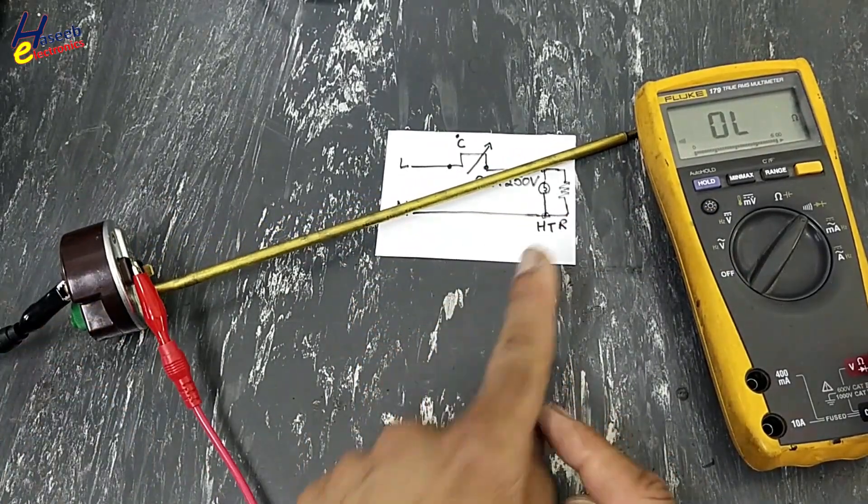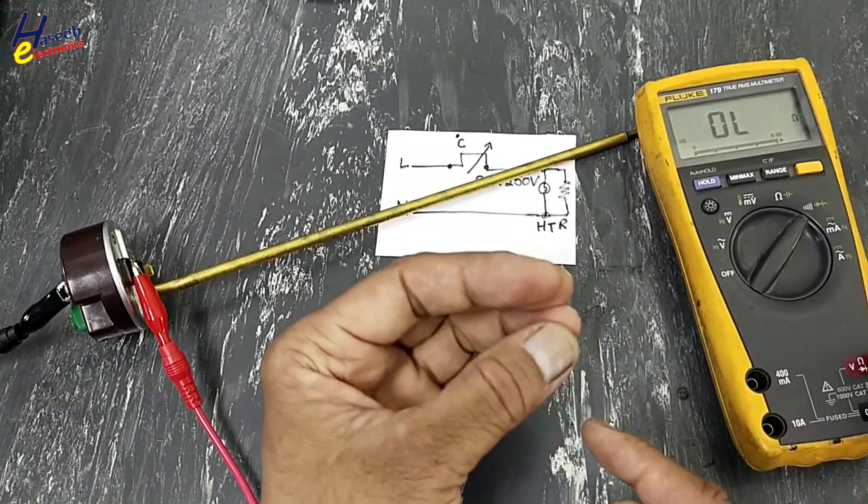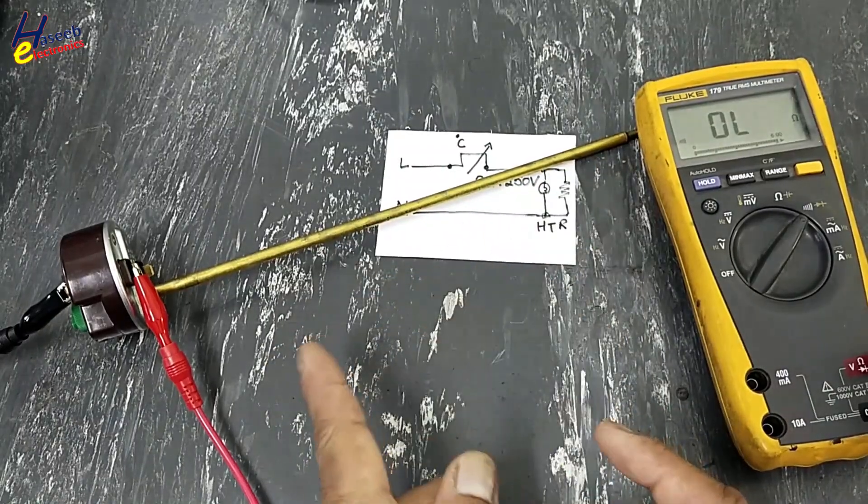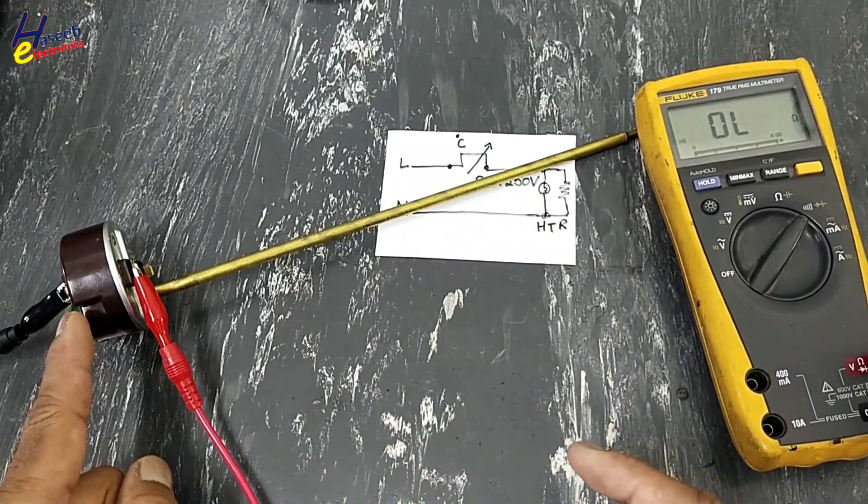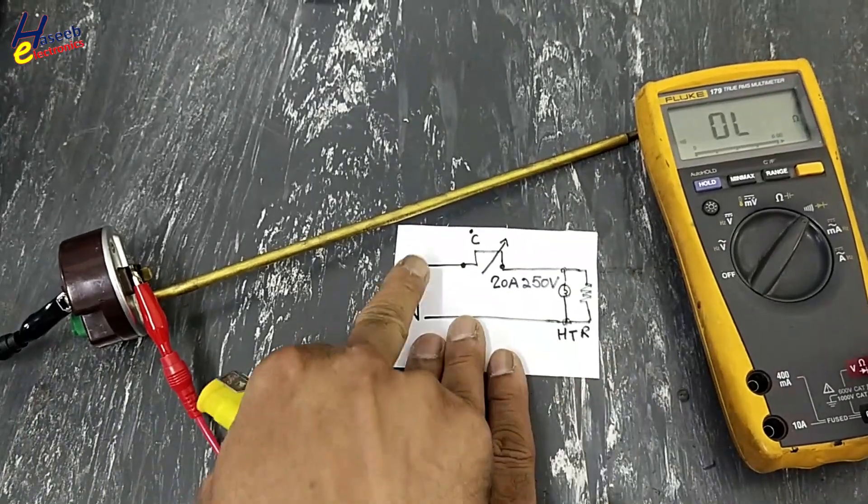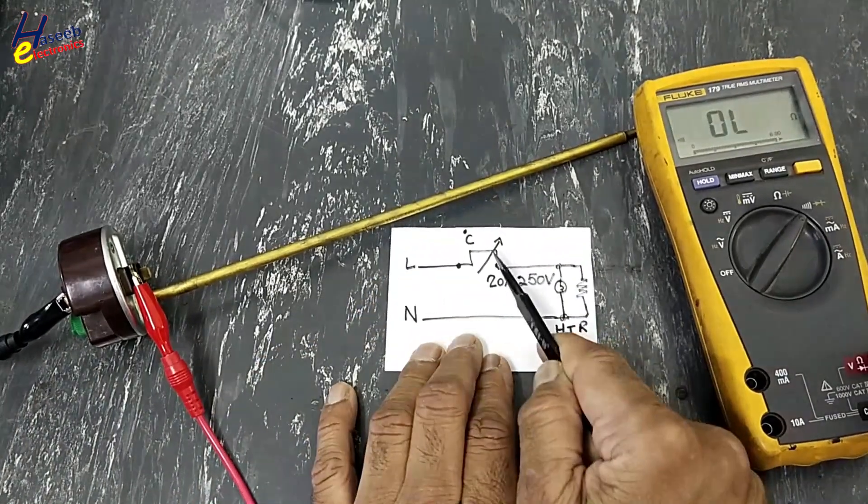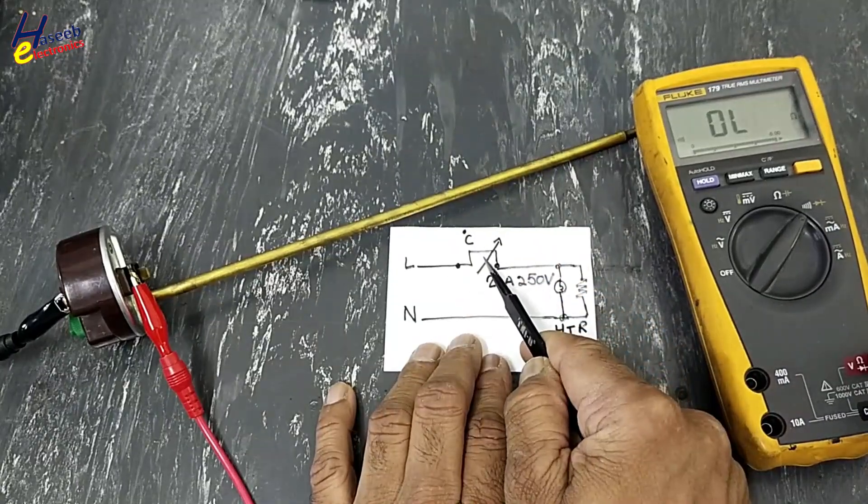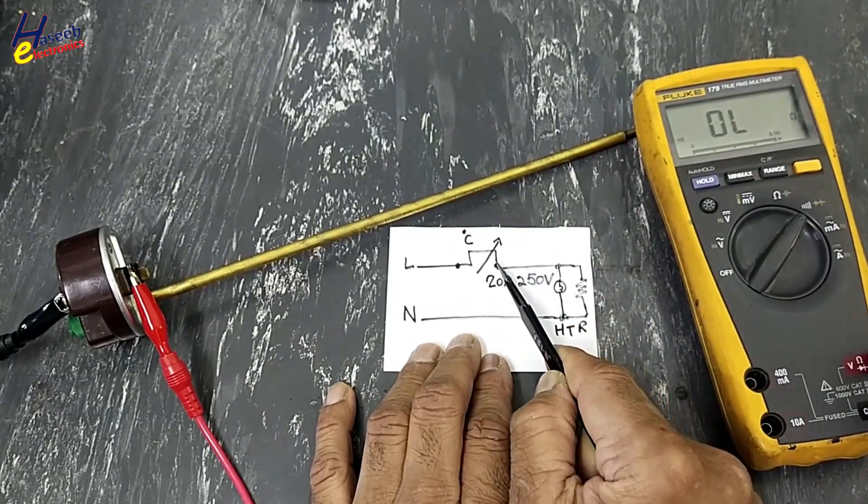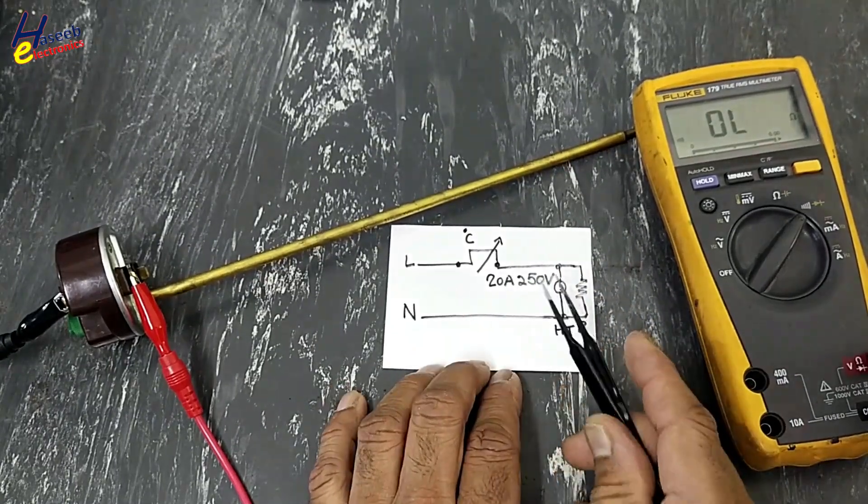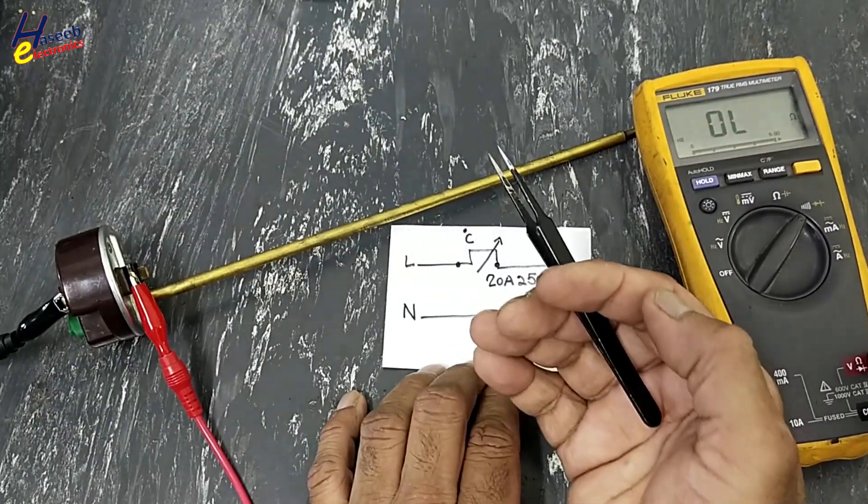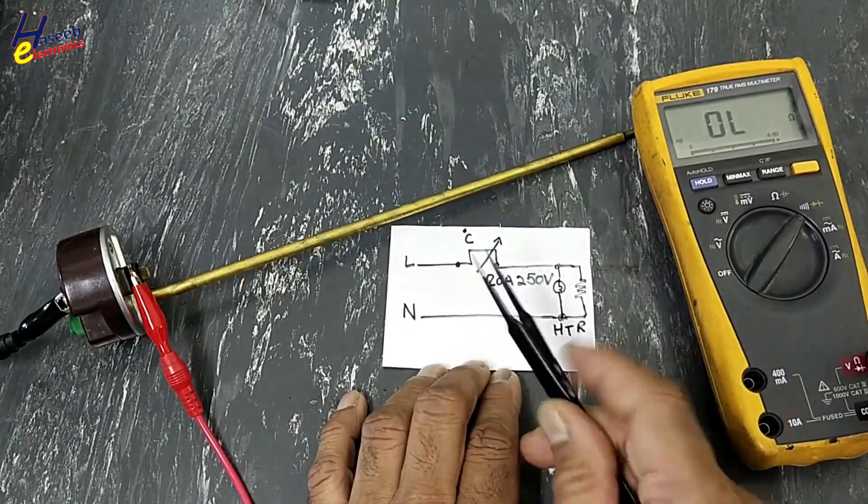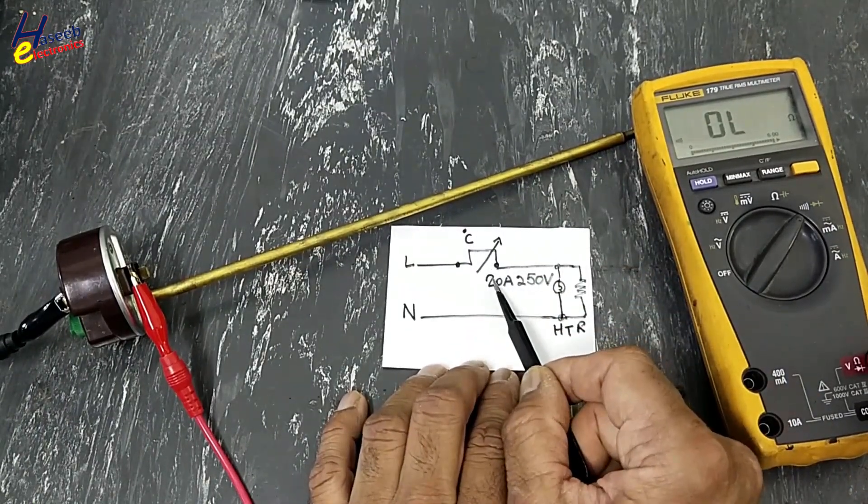And we will wait until its temperature is decreased and it will turn on again. That time it will pass the current to the heater. When temperature will increase, gas present in this tube will push this switch to turn off, so it will turn off. When it will cool down, the gas pressure will return back to normal, so switch will make again.